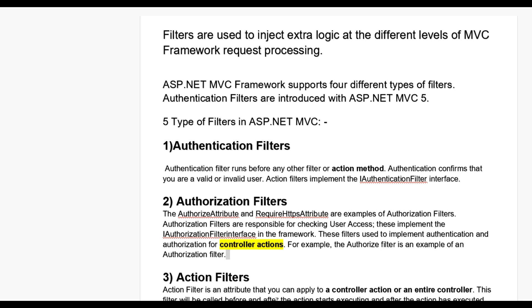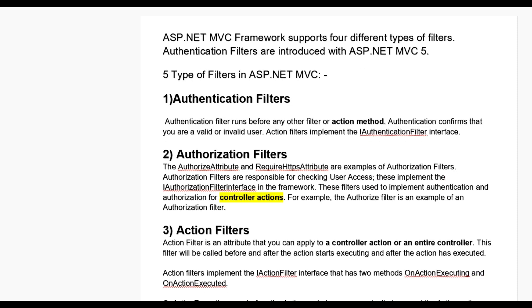Third one is action filters. An action filter is an attribute that you can apply to a controller action or an entire controller. This filter will be called before and after the action starts executing, and after the action has executed. Action filters implement the IActionFilter interface, which has two methods: OnActionExecuting and OnActionExecuted.